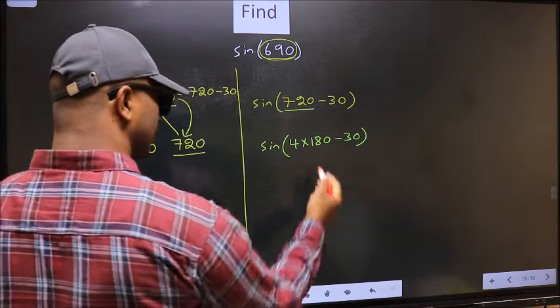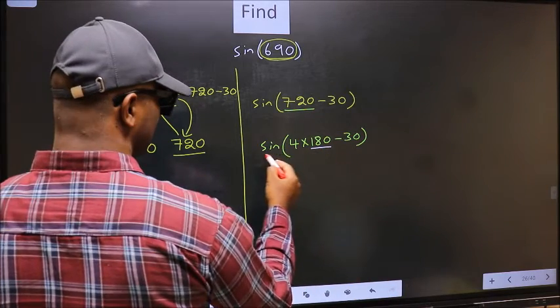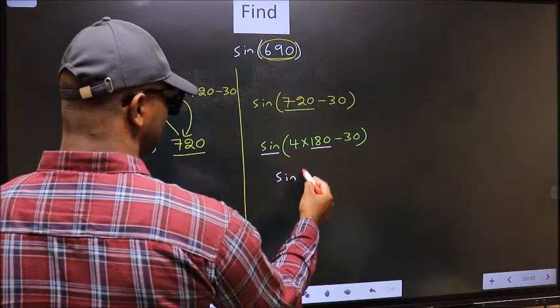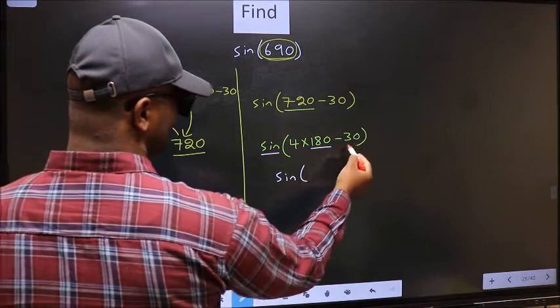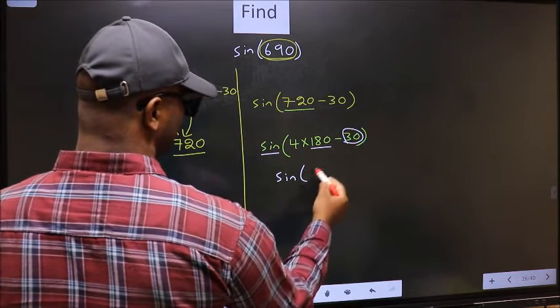Next, here we have 180. So sin is not going to change. It will remain sin. And inside, we get this angle 30.